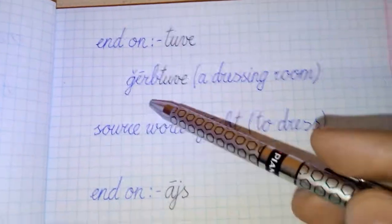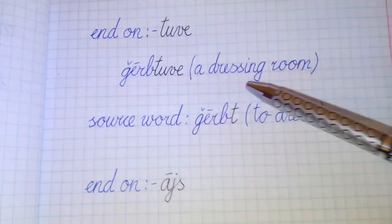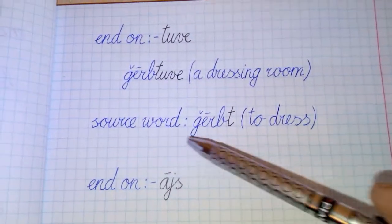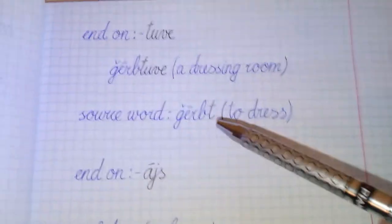Ending -tuve. For example, ģērbtuve, a dressing room. Source word ģērbt, to dress.